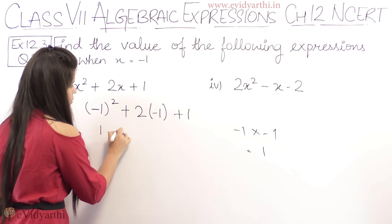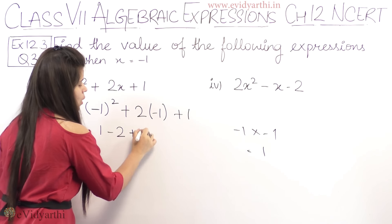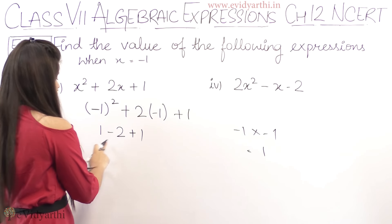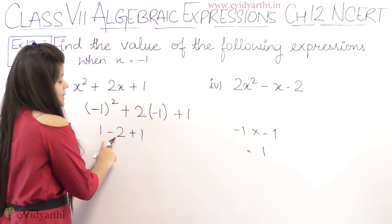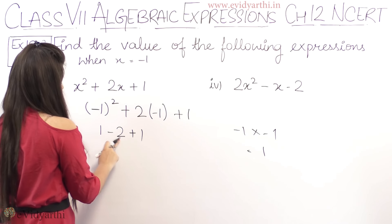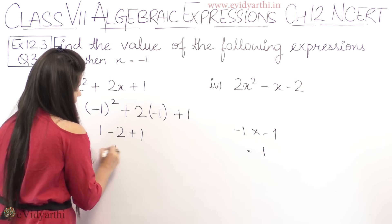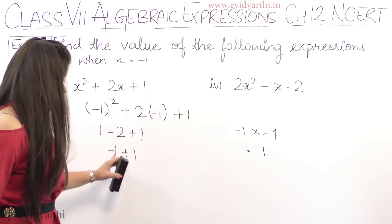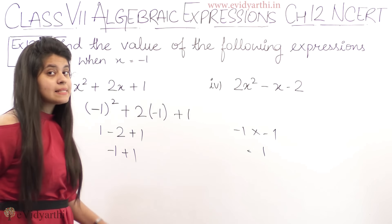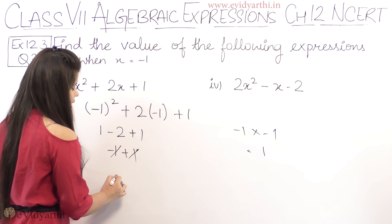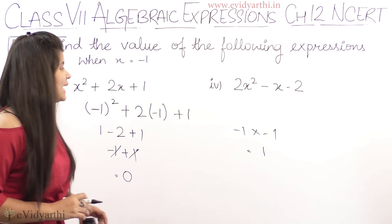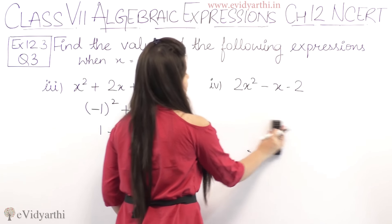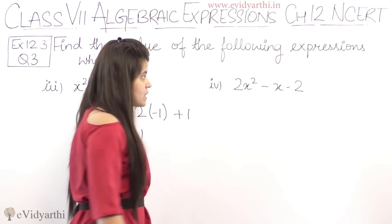And plus 1. Now plus minus minus, so this will be 2 minus 1 is 1, sign minus ka, then we have plus 1. Again minus 1 plus 1 cancel because minus plus minus 1, minus 1 is 0. Now coming to the fourth part. Fourth part has 2x square minus x minus 2. Again x ki value minus 1 put karenge.